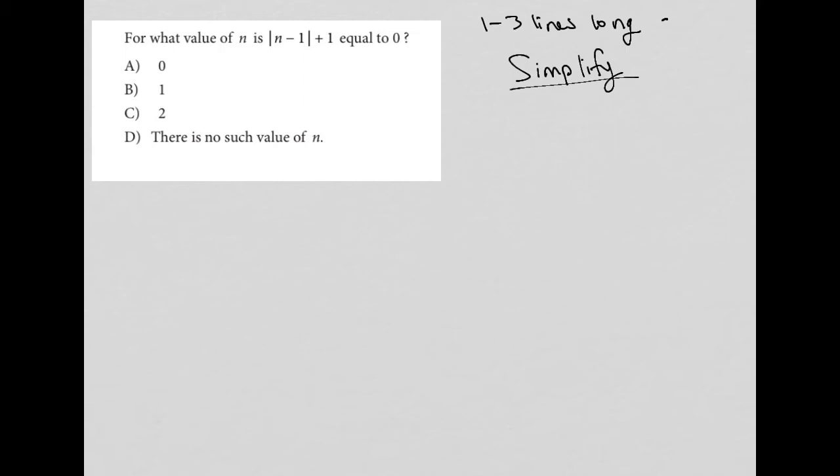And all that means is it's really preferential for you to simplify the question before you attempt to answer the question. In this particular question we have this equation |n-1| + 1 equals 0. So before I start looking at the answer choices, what I'm going to do first is to simplify this.